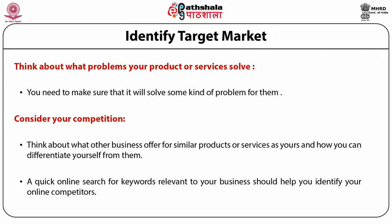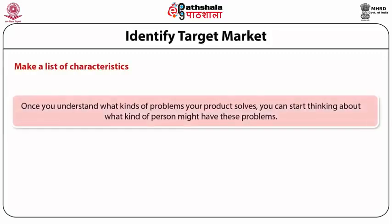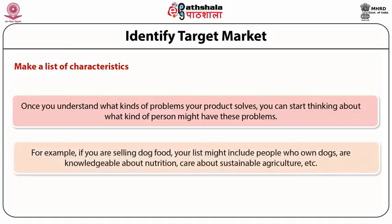Make a list of characteristics. Once you understand what kind of problem your product solves, you can start thinking about what kind of person might have these problems. List as many characteristics your ideal customers would have as you can think of. For example, if you are selling dog food, your list might include people who own dogs, are knowledgeable about nutrition, and care about sustainable agriculture.